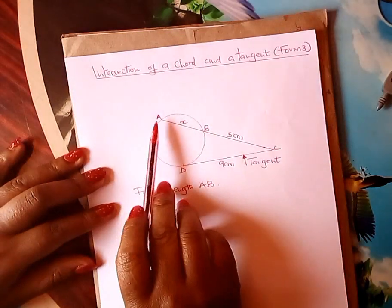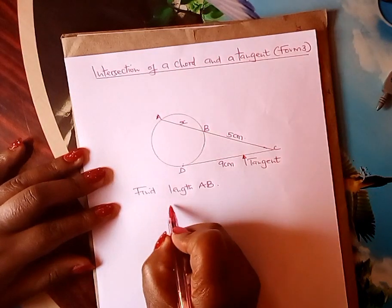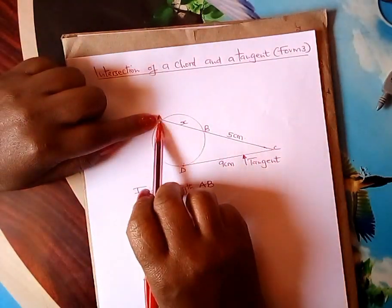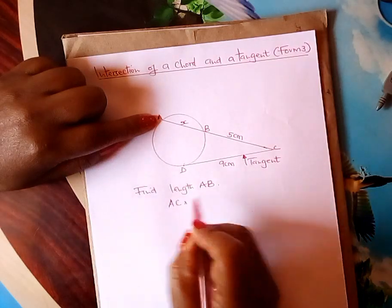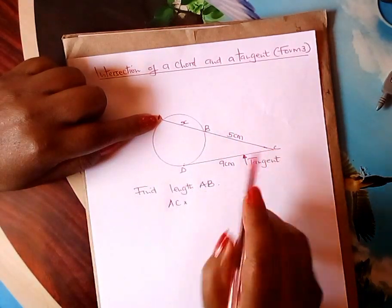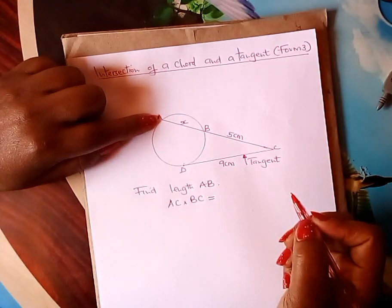So how do you find AB when you have a chord produced to meet with a tangent? The formula is what? AC times BC is normally equals to what, learner?